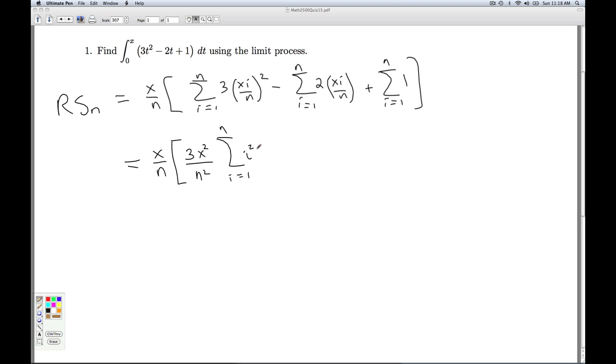Minus 2x over n times the summation, i goes from 1 to n, i. This one, we can go ahead and simplify, because this says we add 1 n times, so it's just going to give me n times 1, which is n.